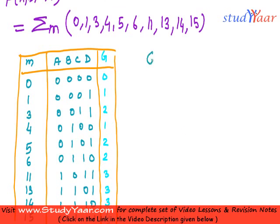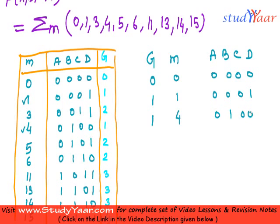I have my group over here and I have my M over here and I have A, B, C, D. Group 0 has 0th minterms which is 0, 0, 0, 0. Group 1 has 1st minterms which is 0, 0, 0, 1. Group 1 also has 4th minterms which is 0, 1, 0, 0. There are no other minterms in group 1. So, I am going to move on to group 2.